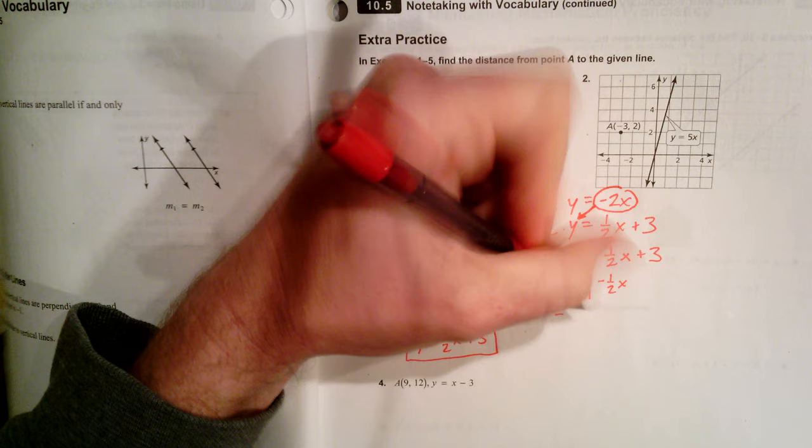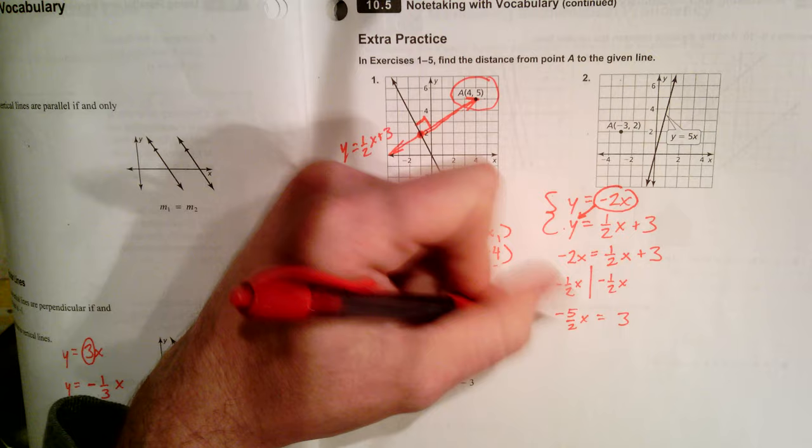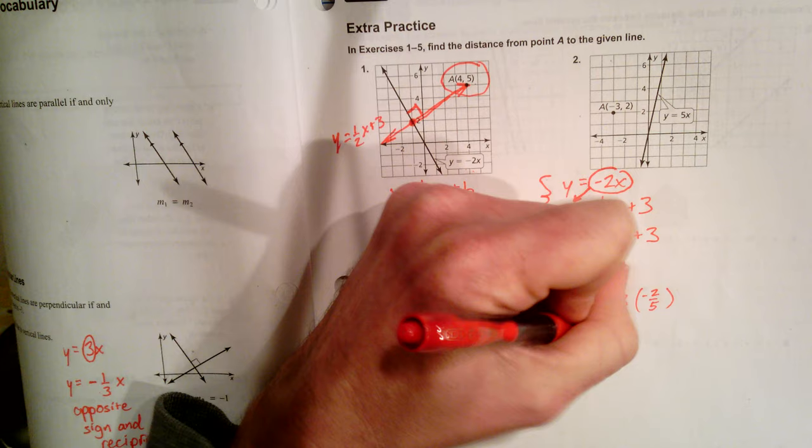So how am I going to do that? I'm going to use a system of equations technique we called substitution. I'm going to substitute one of these equations for the other y. So I'm going to write negative 2x instead of this y on the bottom equals 1 half x plus 3. All right, from here, it's a matter of solving for x.